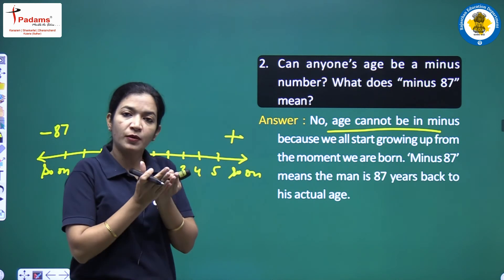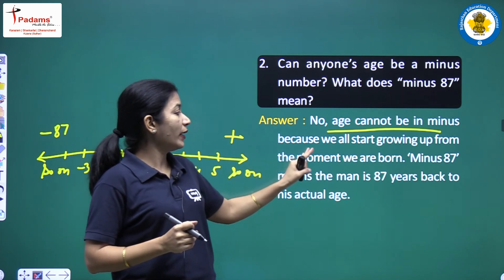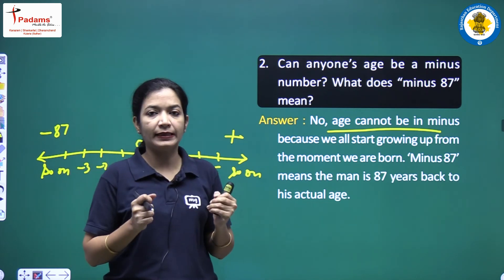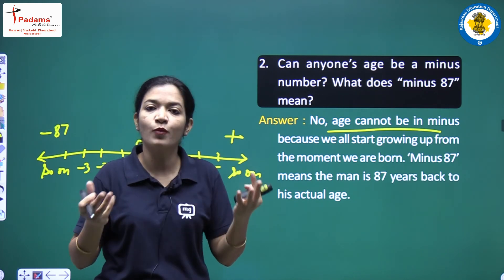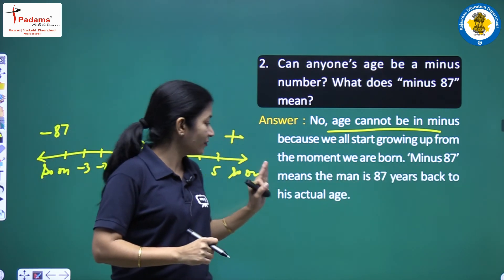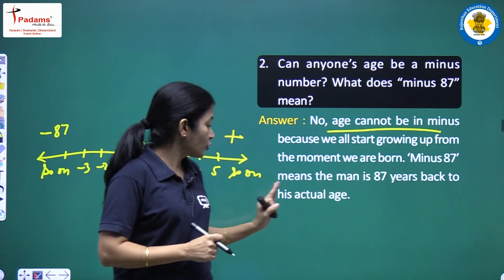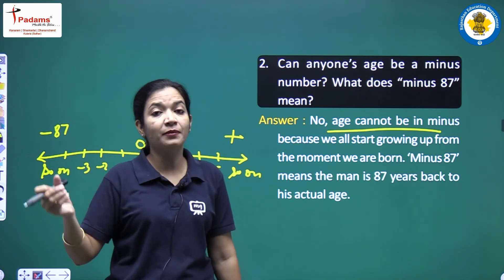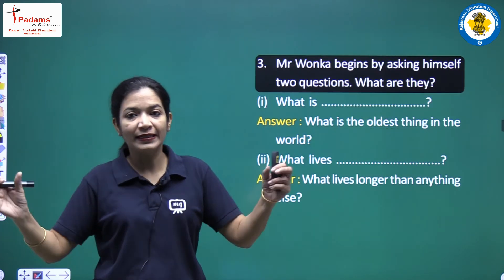This was what he was talking about, but I don't think this happens. In actual situations, I have never heard of such things and I know you all must have also not heard. Let's take the answer: No, age cannot be in minus because from the day when we are born it starts increasing. We all start growing up from the moment we are born, so minus is not possible. Every time it will be plus. Minus 87 means the man is 87 years back to his actual age.